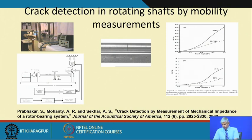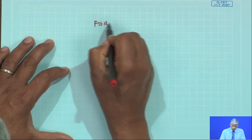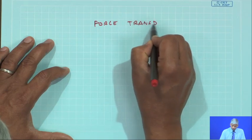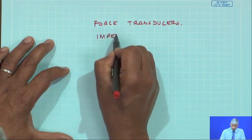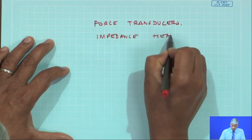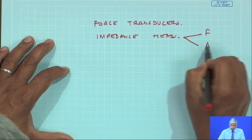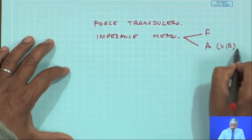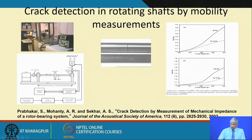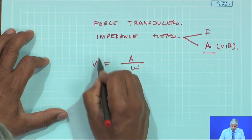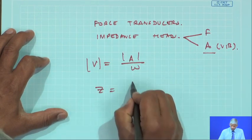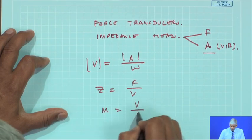There are piezoelectric devices which can be used to measure force, known as force transducers, and devices known as impedance heads, where I can simultaneously measure force and acceleration, and compute the impedance. Once I have the acceleration, velocity is acceleration divided by ω, so I can find the velocity, and impedance is F/V, or mobility is V/F, the inverse.